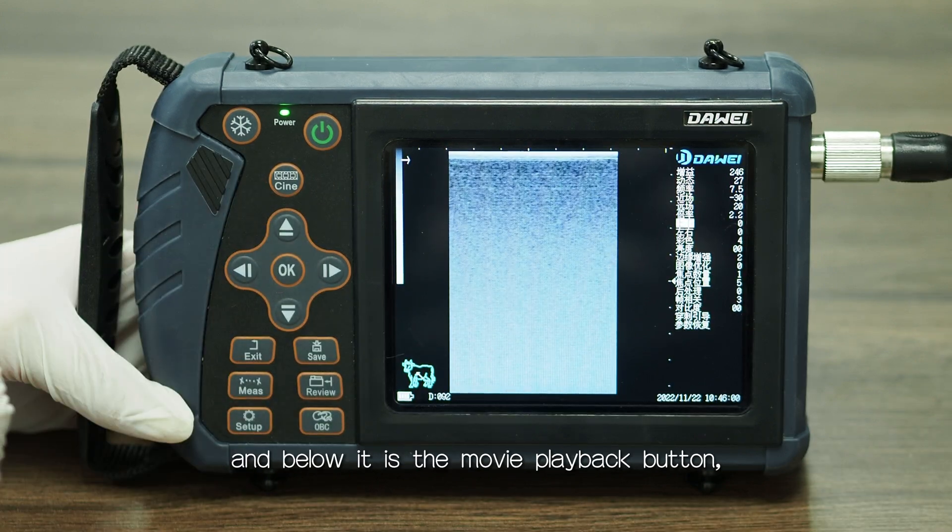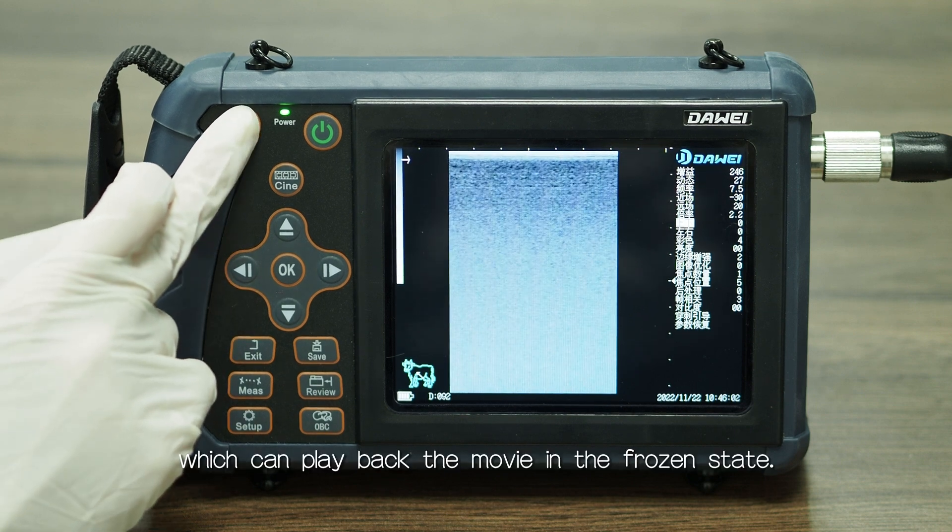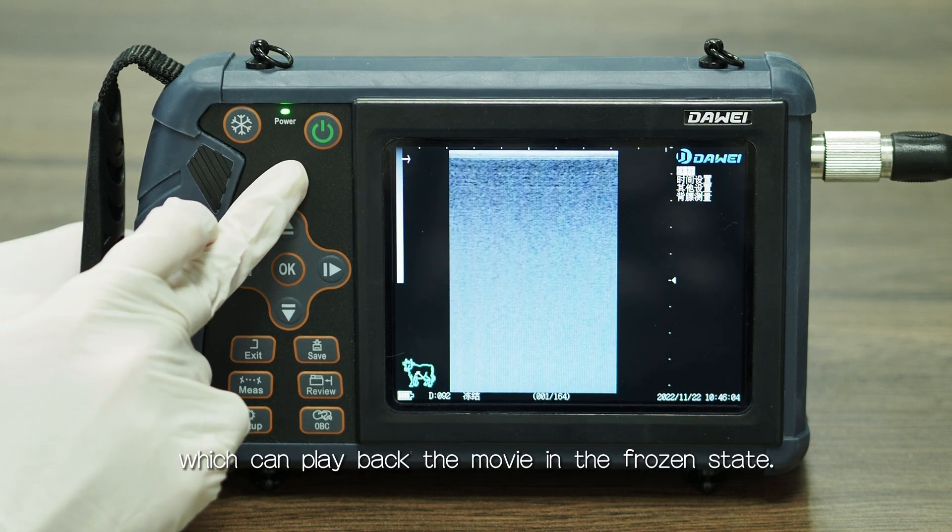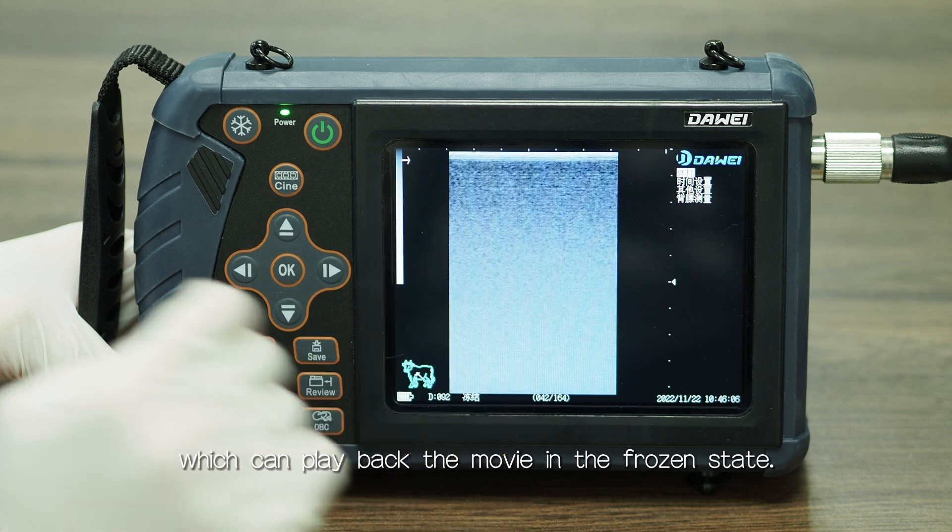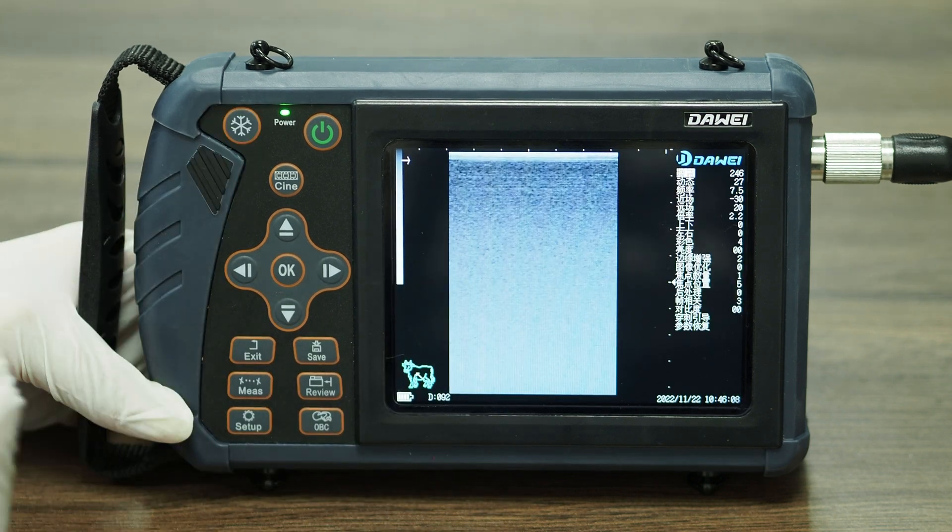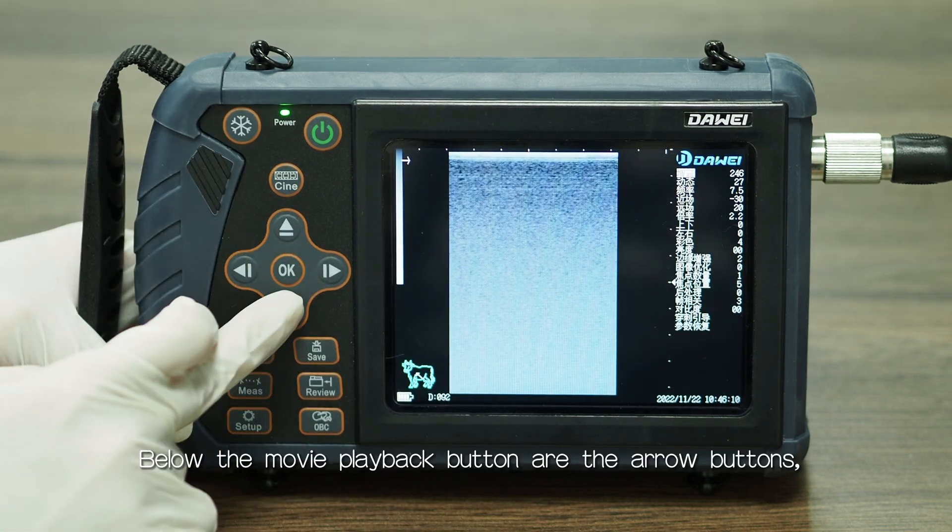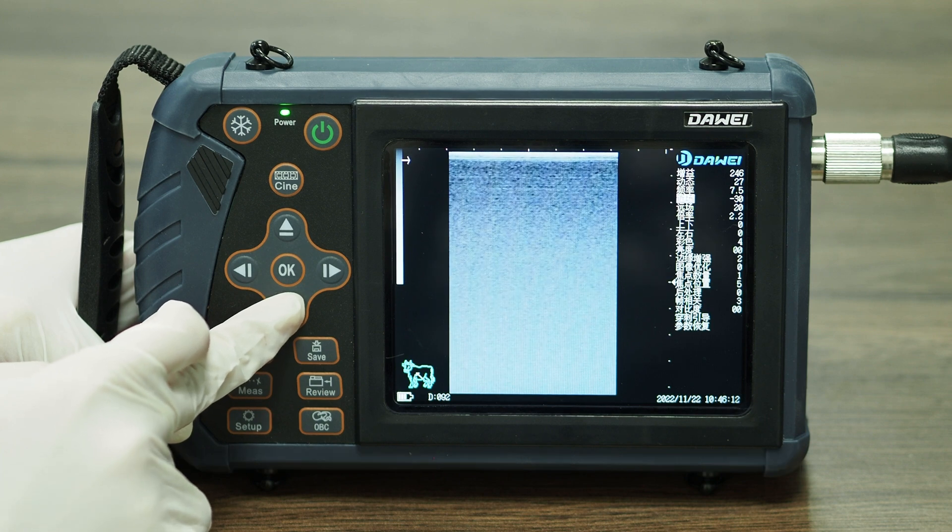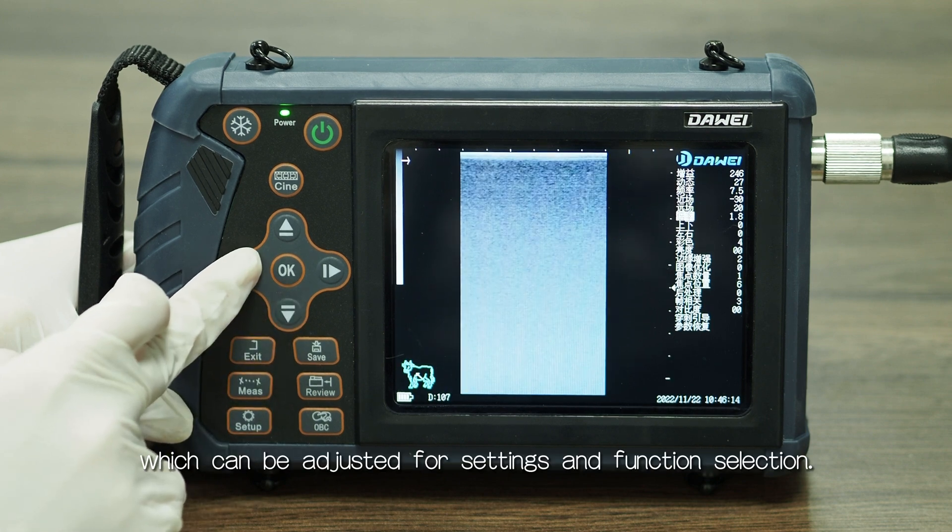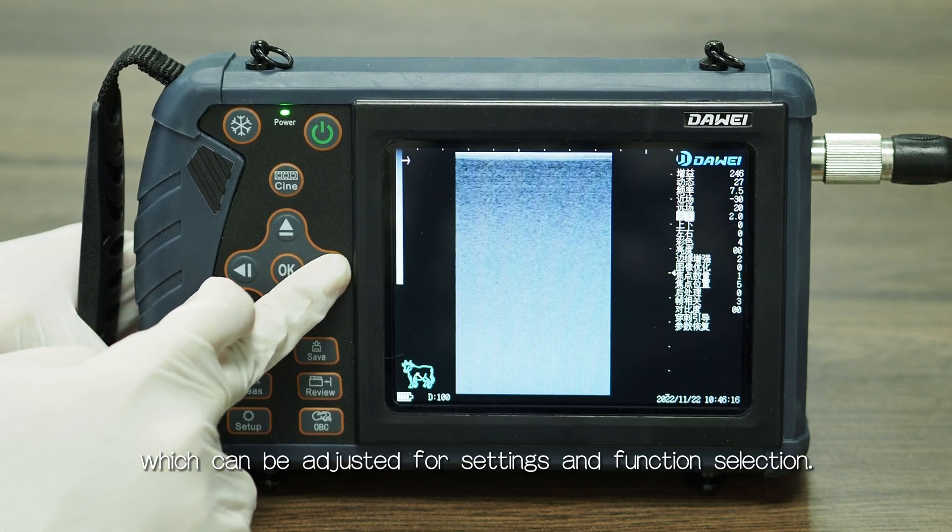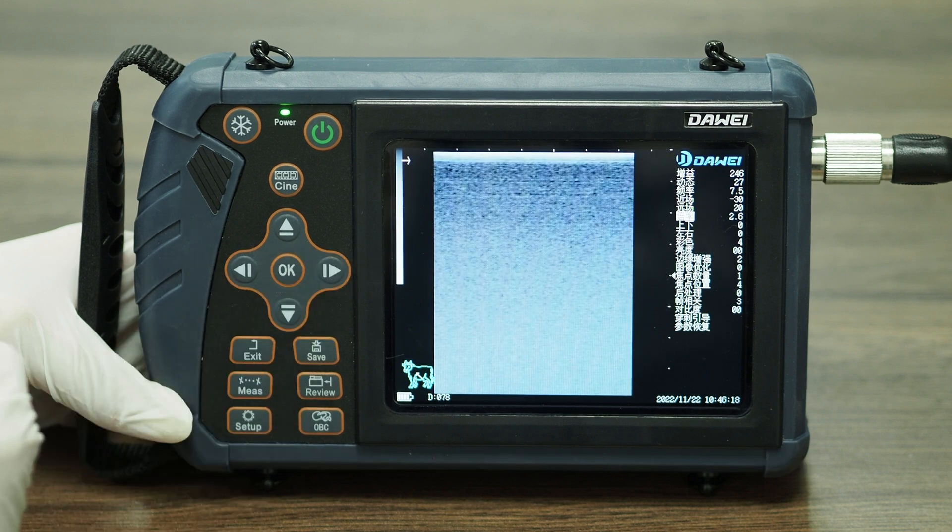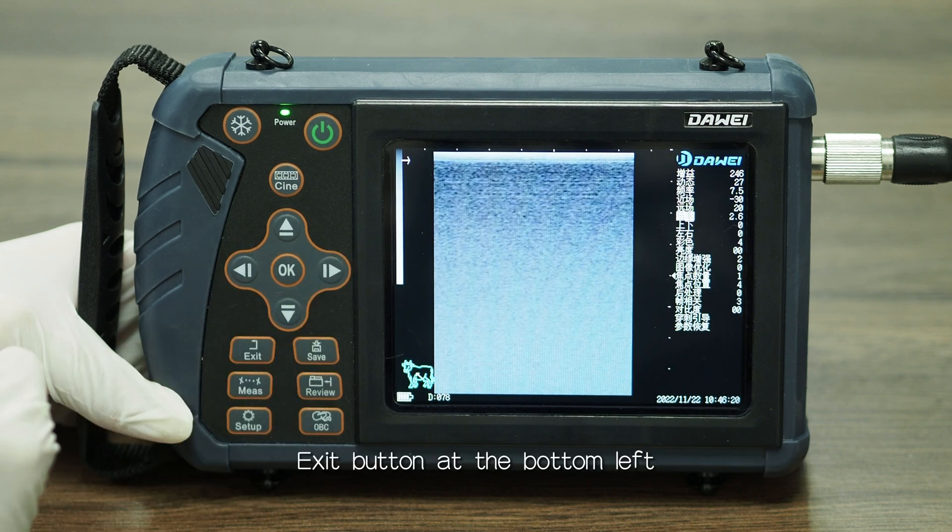The movie playback button can play back the movie in the frozen state. Below the movie playback button are the arrow buttons, which can be adjusted for settings and function selection. The exit button is at the bottom left to exit the measurement state.